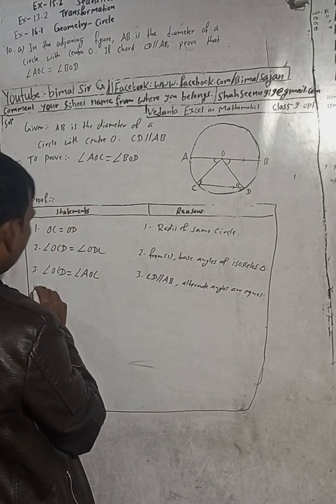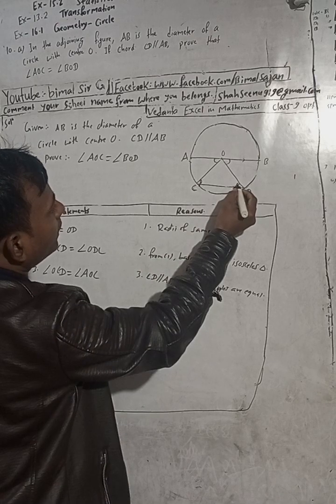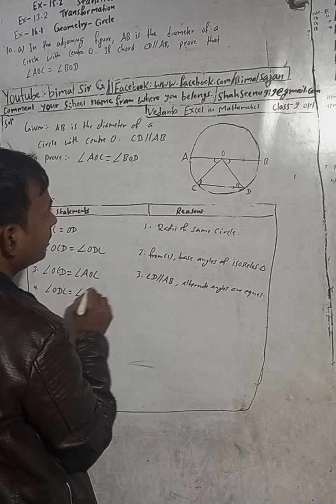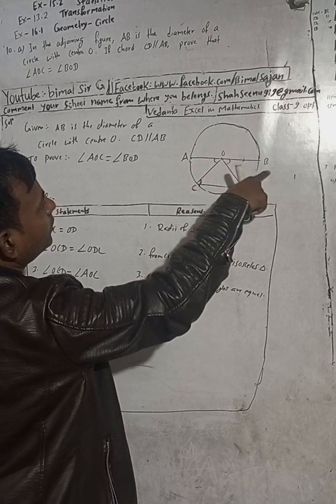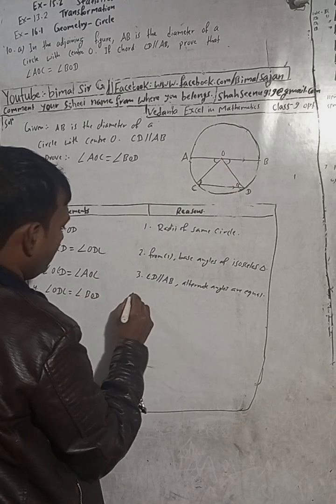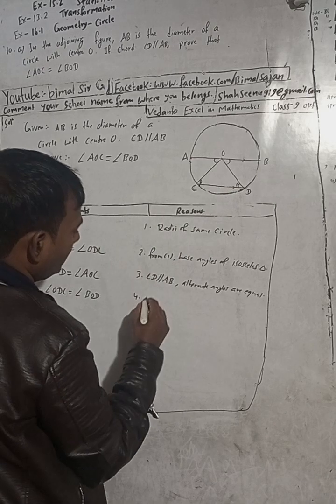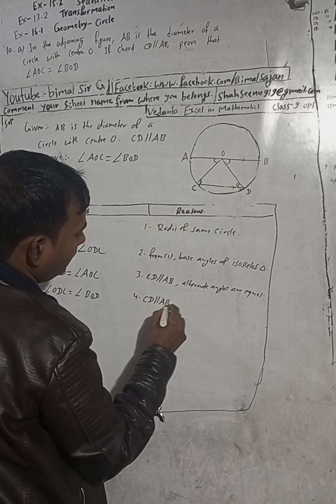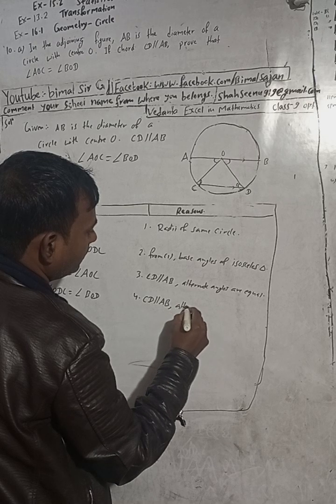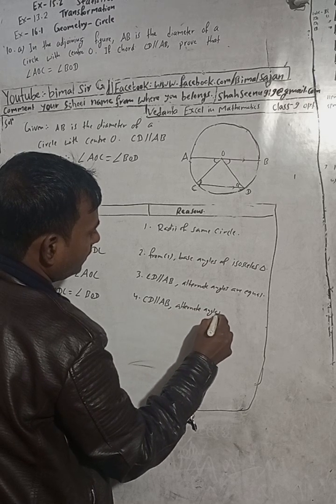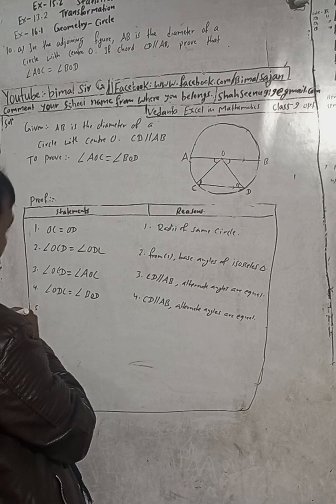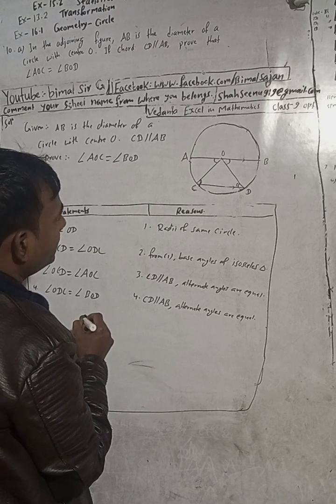Angle OCD is equal to angle AOC. Alternate angles are equal. Number 4, alternate angle equal to angle ODC is equal to angle BOD.